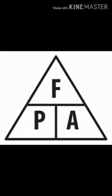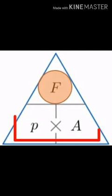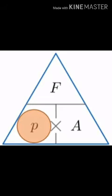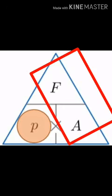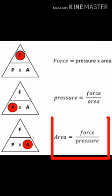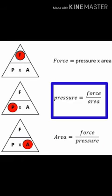Let's see this triangle. This triangle explains the relation and the formula showing how these three quantities — force, area, and pressure — are related. If you need to find force, then force equals pressure multiplied by area. Similarly, if you want to find pressure, then pressure equals force upon area. And in the same manner, area equals force upon pressure. This formula explains that if the area is increased, the pressure decreases.